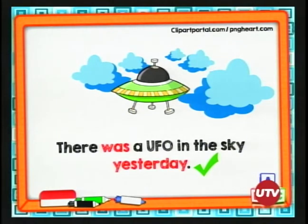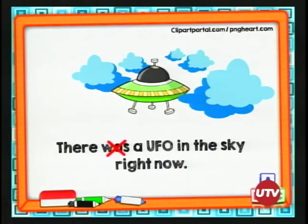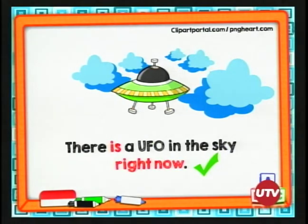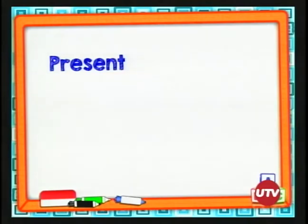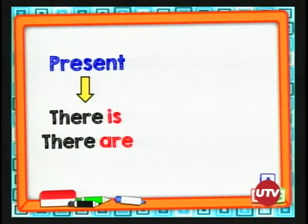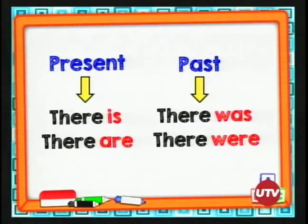Vamos a acomodar la oración cambiando "was" por "there is": "There is a UFO in the sky right now." Podemos concluir que there is es para presente y there was es para pasado. En presente: there is, there are; en pasado: there was, there were. Aunque no vamos a entrar mucho en detalle, es importante saber que there is y there are son solo para presente, y en una clase posterior veremos más en detalle el there was y el there were.